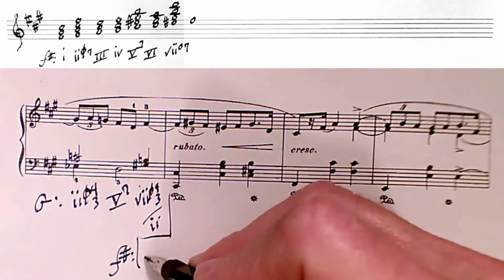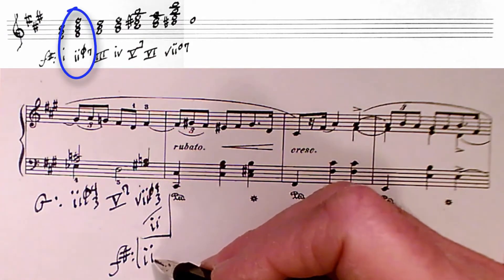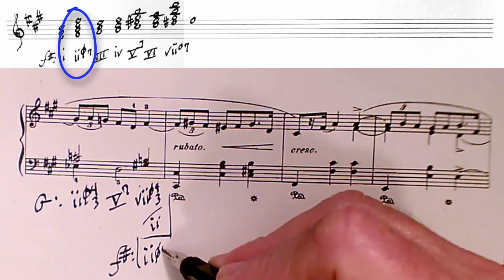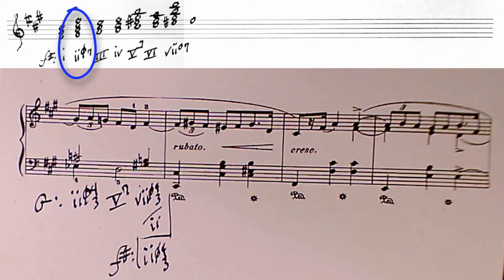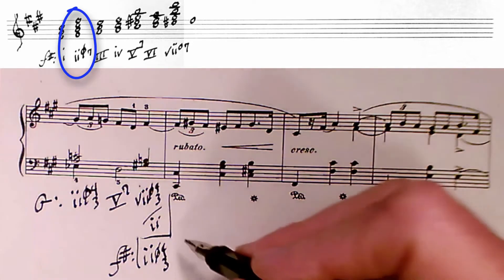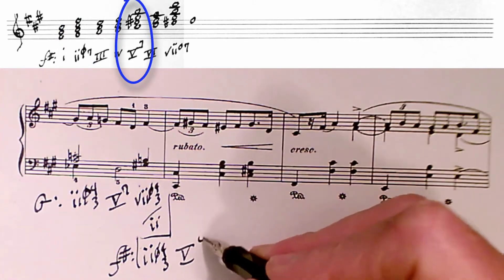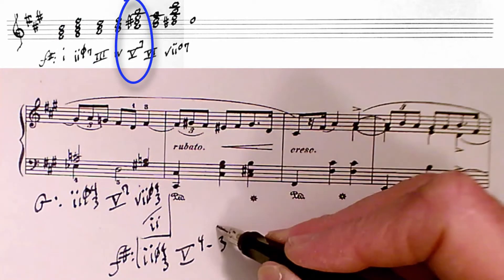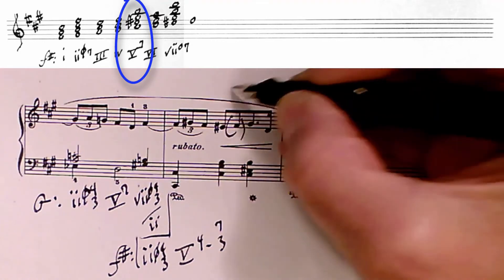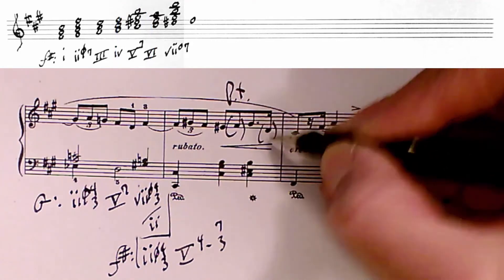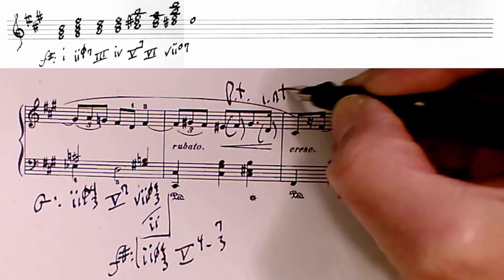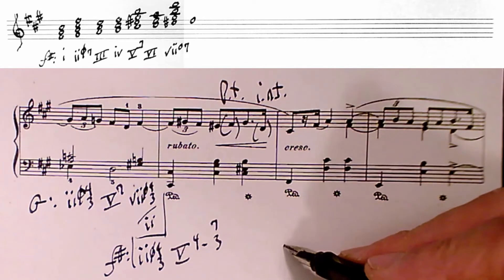So we're going to go ahead and reanalyze this as simply a two, half diminished, four, three in the key of F-sharp minor. And as we did at the beginning of the piece, we have the five chord with a four three suspension, the seventh arriving here, the passing tone, the incomplete neighbor tone, moving back to the one chord.